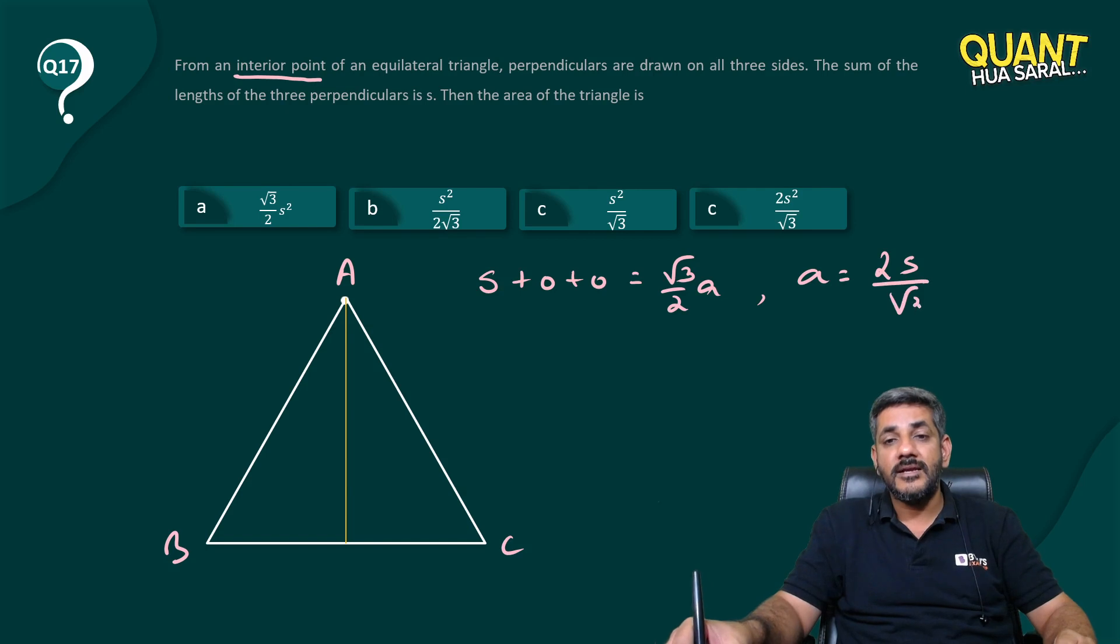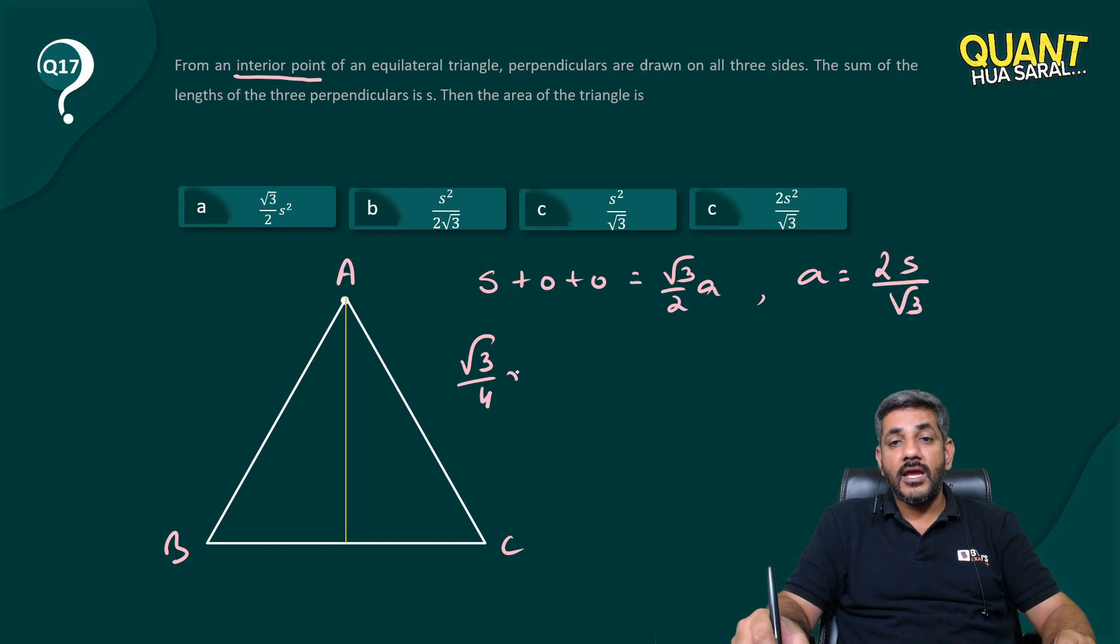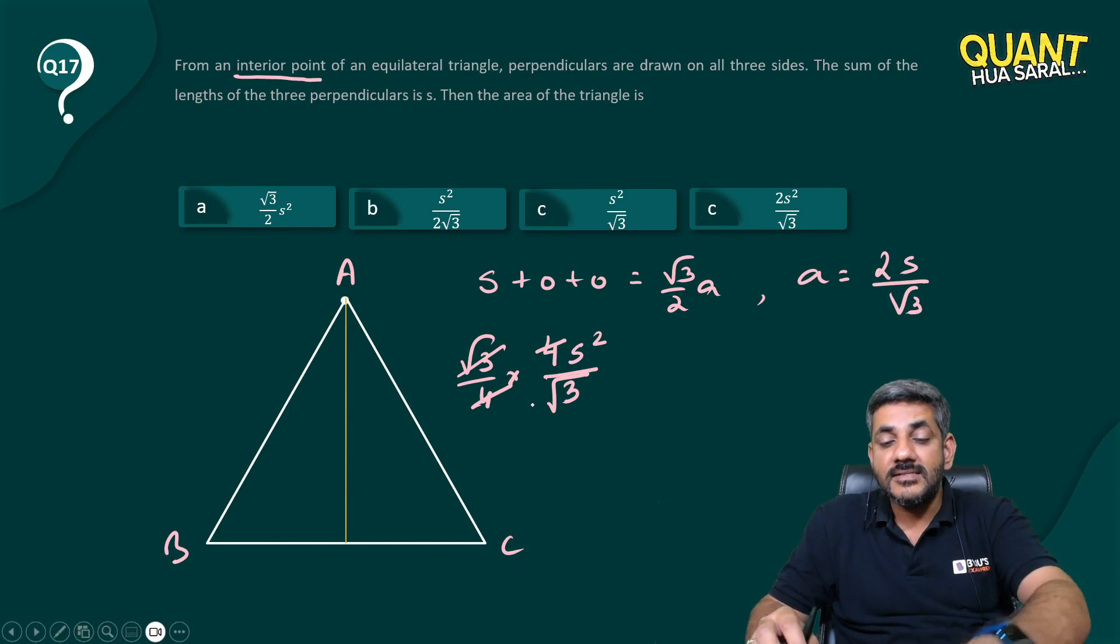And what is the area of an equilateral triangle? It is root 3 by 4 a square. So what is the square of this? 2 square is 4, s square divided by root 3 square is 3. 4 and 4 cancel out, root 3 cancels to root 3.